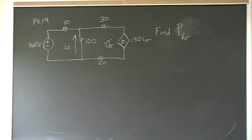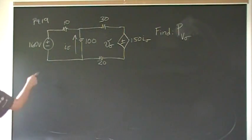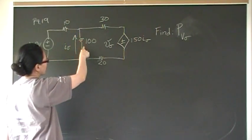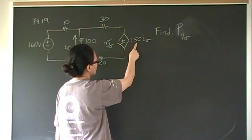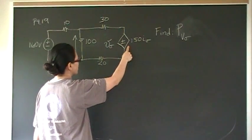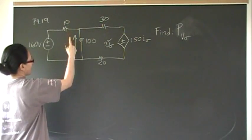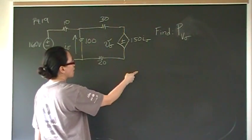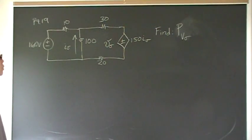Hi guys, so this is problem number 19 from chapter 4, from the section on node voltage with dependent sources. In this problem we have a 160-volt independent voltage source connected in series with a 10-ohm resistor. At this node we have a 100-ohm resistor, a 30-ohm resistor connected in series with a dependent voltage source of value 150·I_delta. The value of this voltage source depends on the current I_delta, in the direction of the voltage rise. We want to find the power dissipated by this dependent voltage source, which I'll call V_delta.